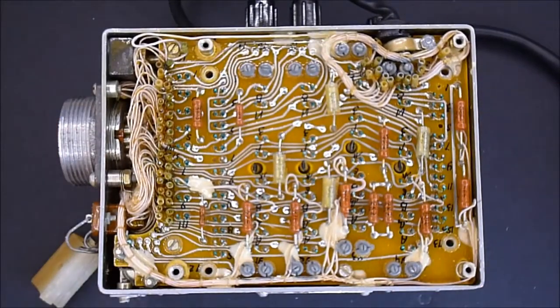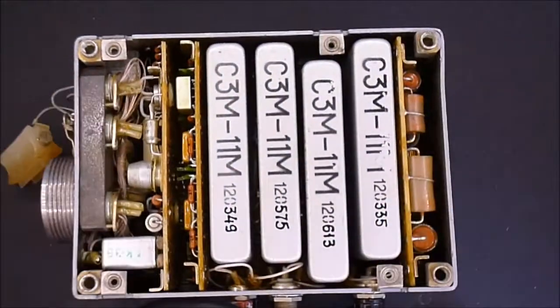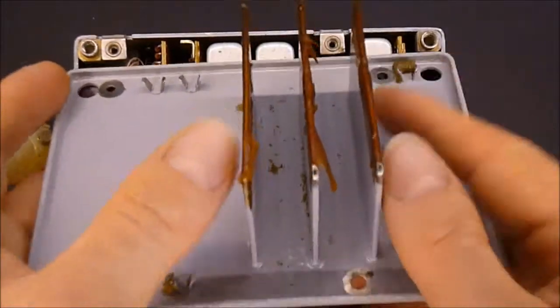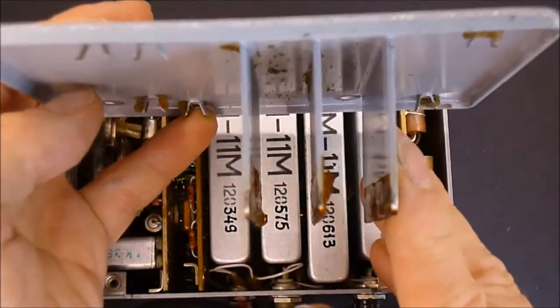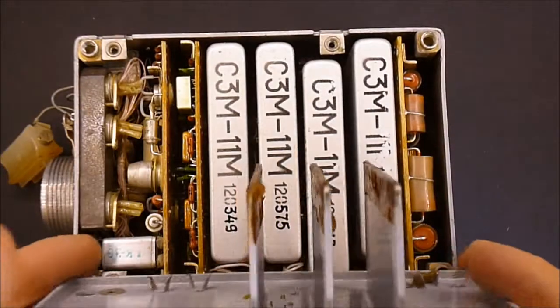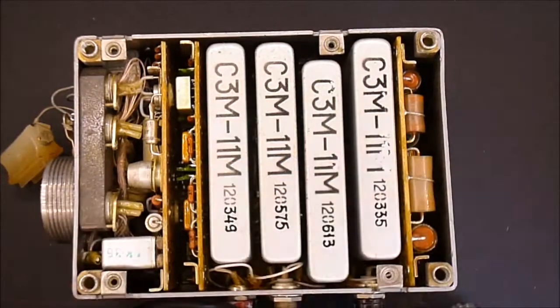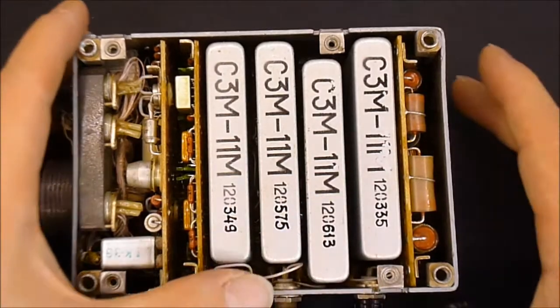One interesting thing is this cover. This cover for this side has some walls. I do not know the purpose, if it is for shielding or something like this. It goes like this between the metal cans here.